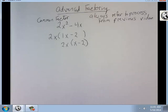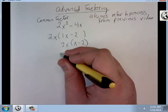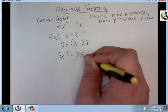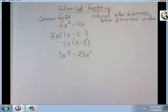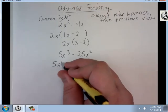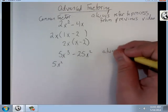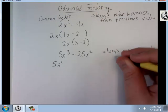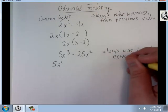Just find a term that goes into everything that's in your equation. How about something like this? 5x cubed minus 25x squared. Well, I know my number is going to be 5, but now I'm going to pull out x squared.